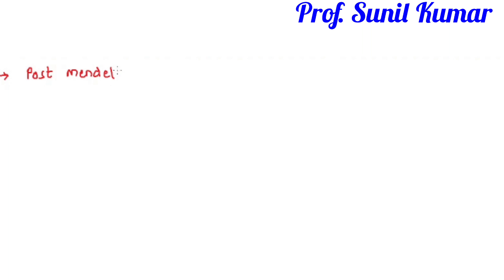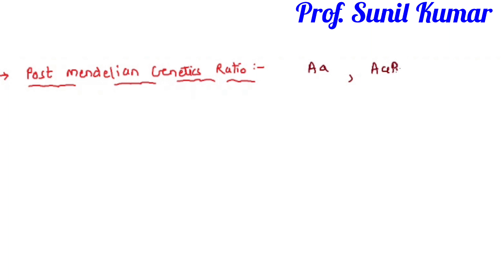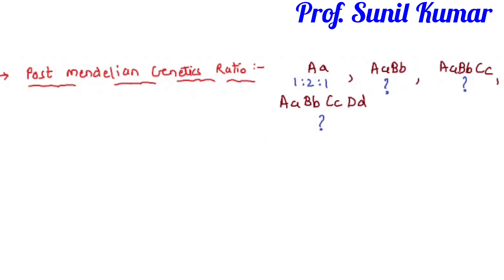Now we need to understand the ratios of post-Mendelian genetics, because post-Mendelian ratios differ from Mendel's. For Mendel, monohybrid was 3:1, but in post-Mendelian genetics for a single hybrid it is 1:2:1. We need to find the ratio for one, two, three, or four hybrids — and the magic triangle is what the rest of the video is about.